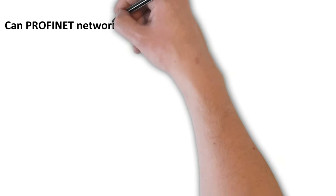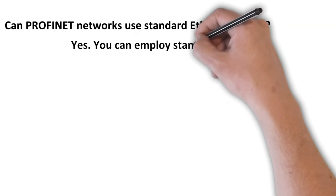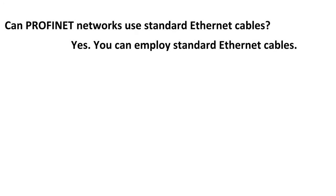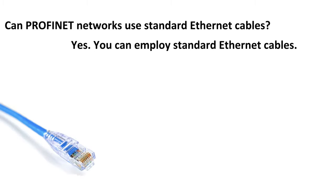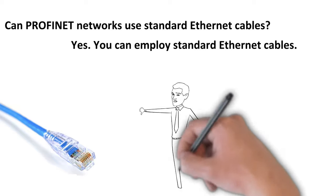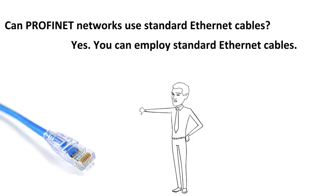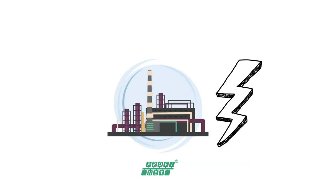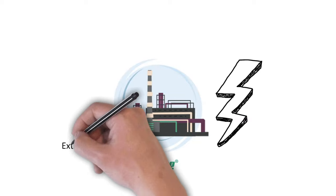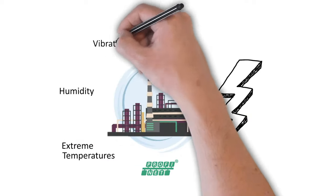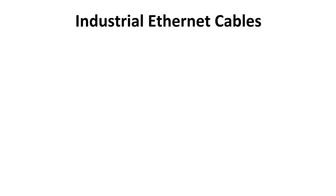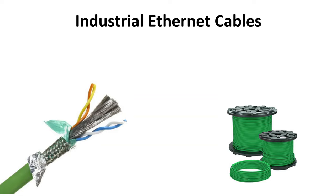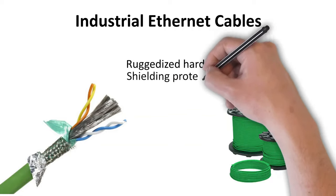Can Profinet networks use standard Ethernet cables? Yes, you can employ standard Ethernet cables to build a Profinet network. However, the Ethernet cables you might encounter in a home or office environment might not be the best choice — those cables can be weak and might lack shielding. The factory floor, where Profinet is most commonly used, can be a rough environment with challenging conditions such as extreme temperatures, humidity, vibrations, and electromagnetic interference. For these reasons, even though you can employ standard Ethernet cables, it is recommended to use industrial Ethernet cables. On the wire they're the same thing, yet industrial Ethernet is characterized by ruggedized hardware, shielding protection, and proper jacketing.